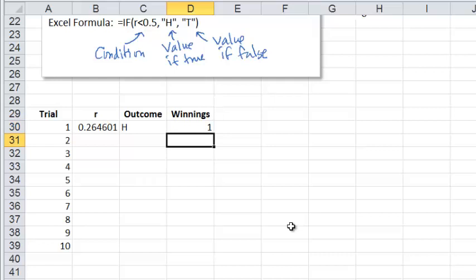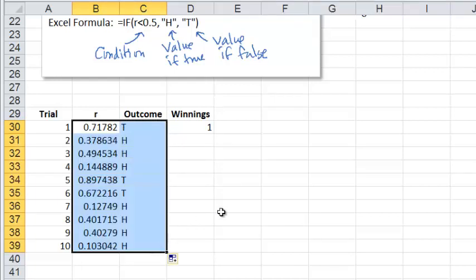So now your friend says, wait a minute, just doing it once is not really fair. Let's do it 10 times. Let's do 10 coin tosses. So we say, sure, let's just copy this down. So we have 10 of these. So here are now the outcomes. Notice that the first outcome changed from heads to tails. And that's the property of the random numbers. Anytime you do something, anytime you edit a cell or enter some new value, all the random numbers are going to change.